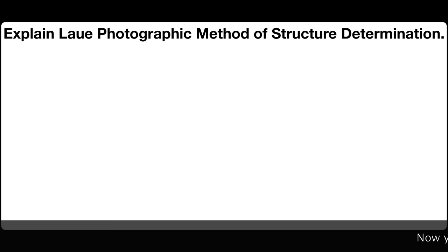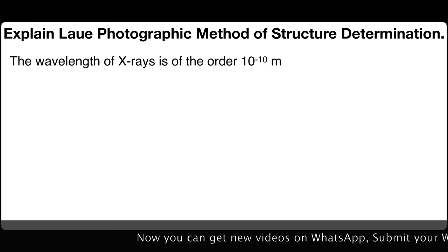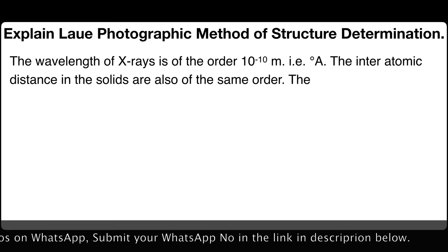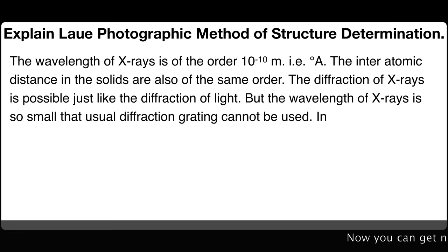State Laue's photographic method of structure determination. The wavelength of X-rays is of the order 10 to the power minus 10 meters, that is one angstrom. The interatomic distance in solids is also of the same order. The diffraction of X-rays is possible just like the diffraction of light, but the wavelength of X-rays is so small that a usual diffraction grating cannot be used.